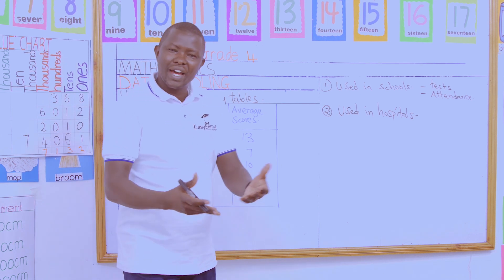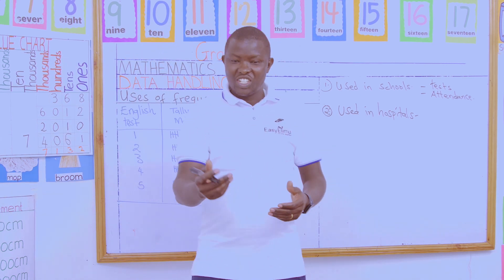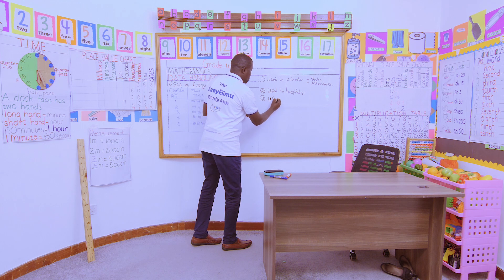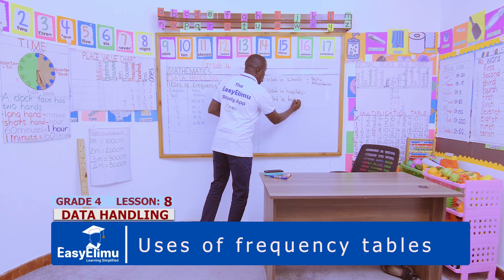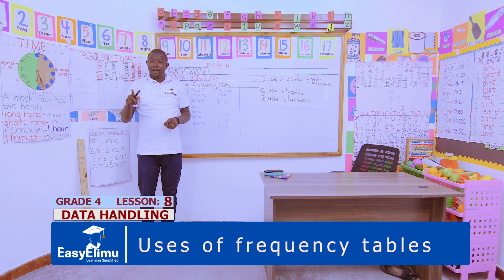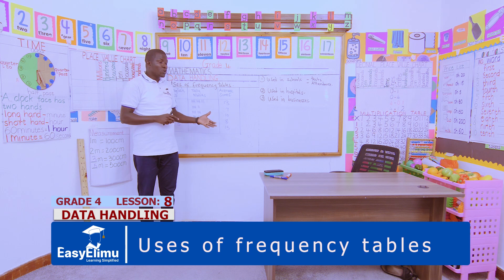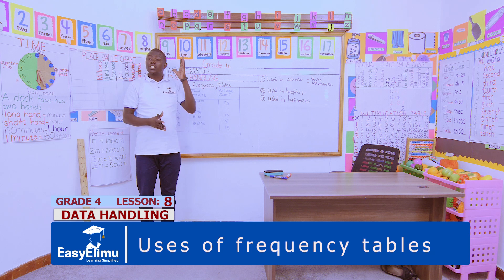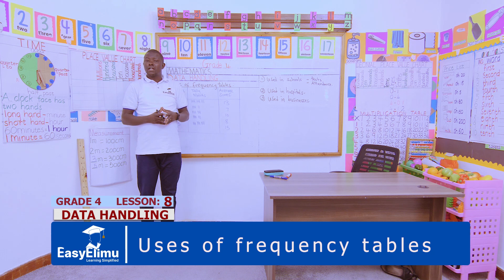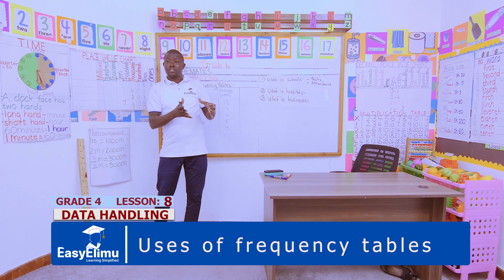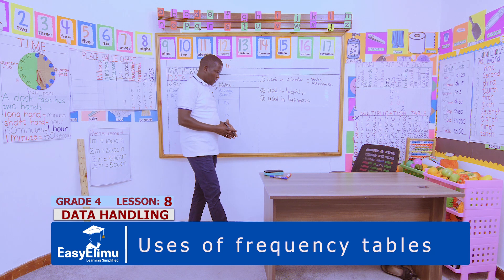Where else can we use frequency tables? We can also use frequency tables in businesses. How? To know which commodity is selling very high and which commodity is lagging behind. We will use the frequency tables. Also, to tabulate the amount of coins versus notes — how much money are we getting, how many notes we have from a certain day in a certain sale, and the coins. We will use frequency tables to tabulate such reports.